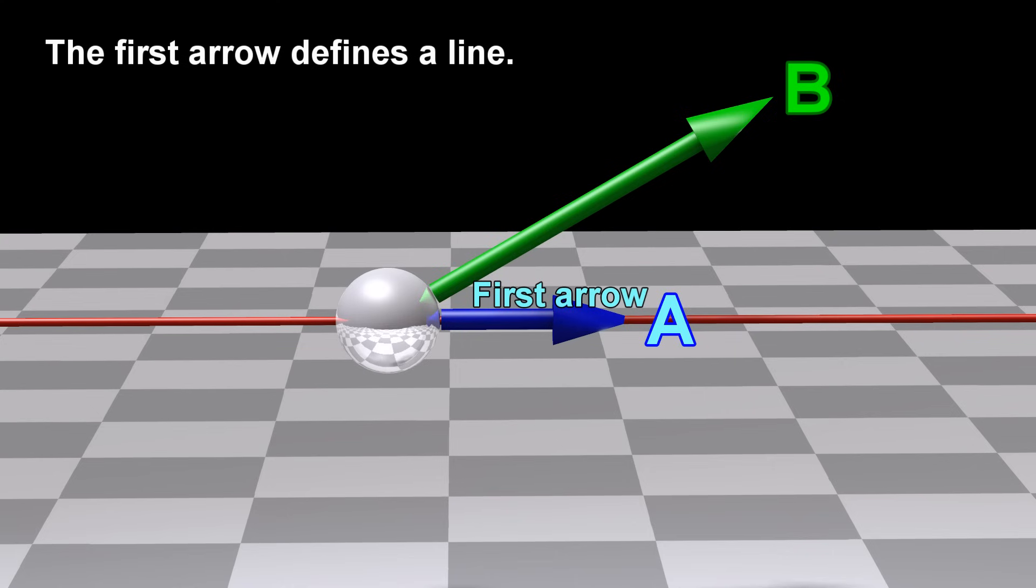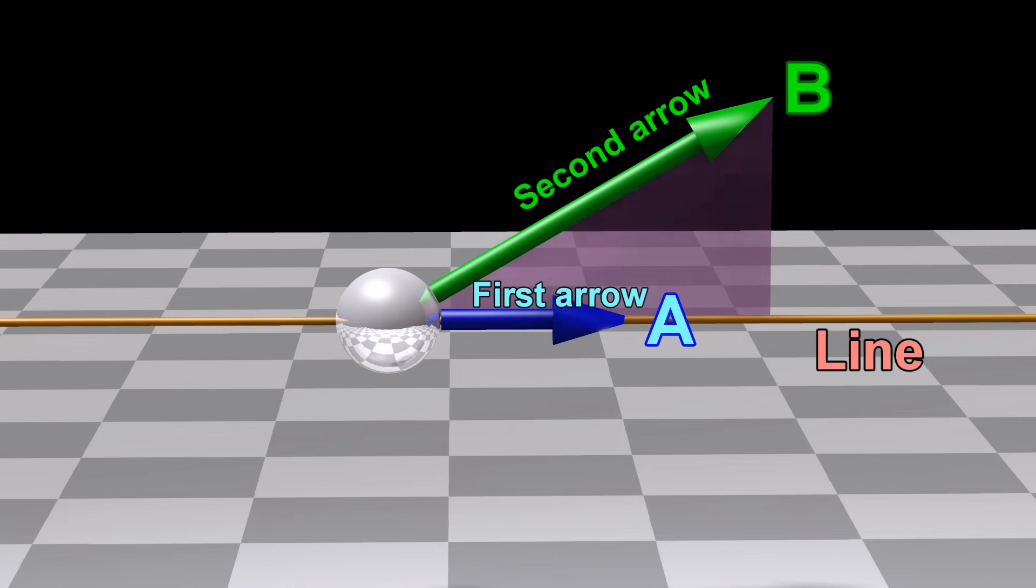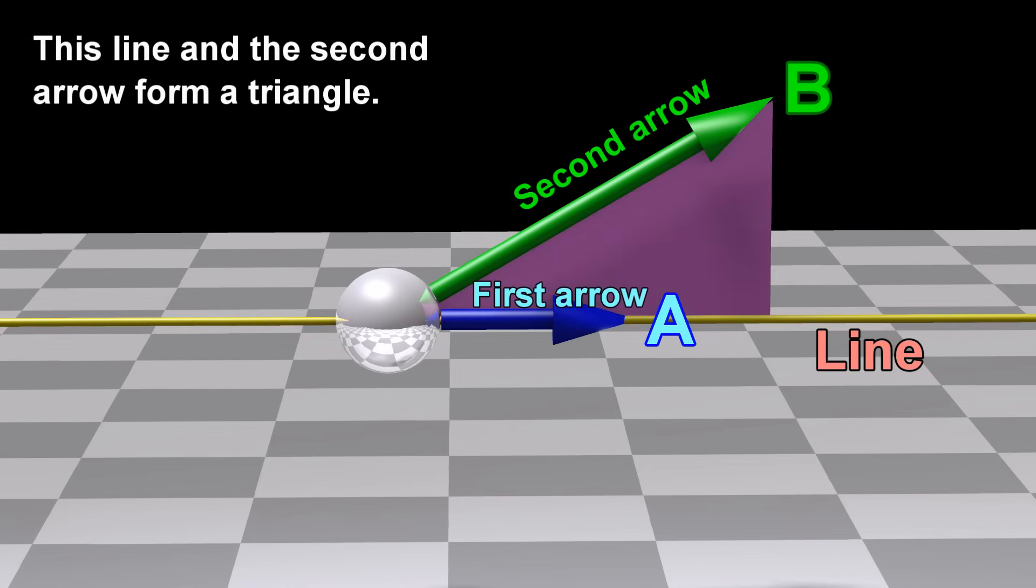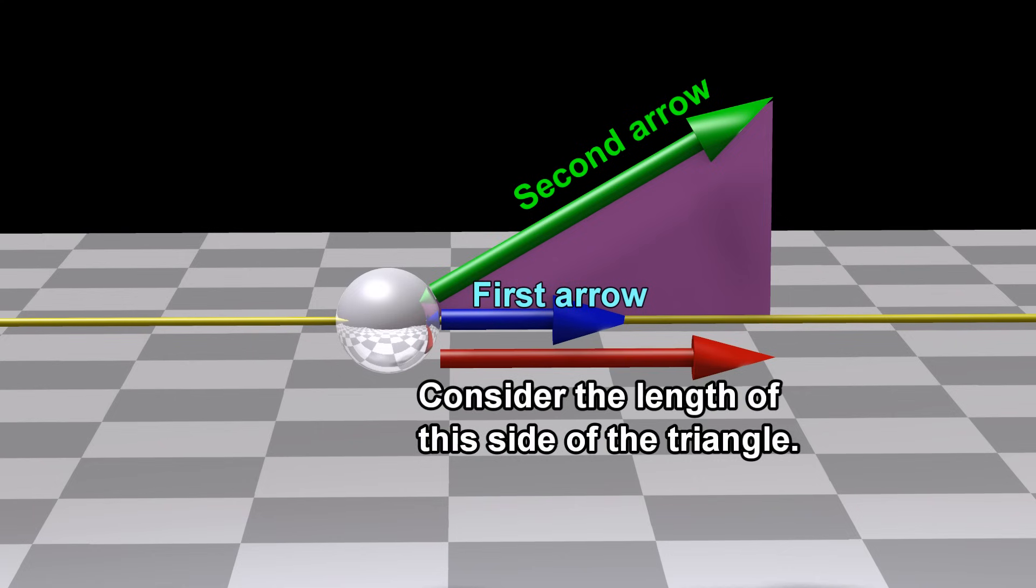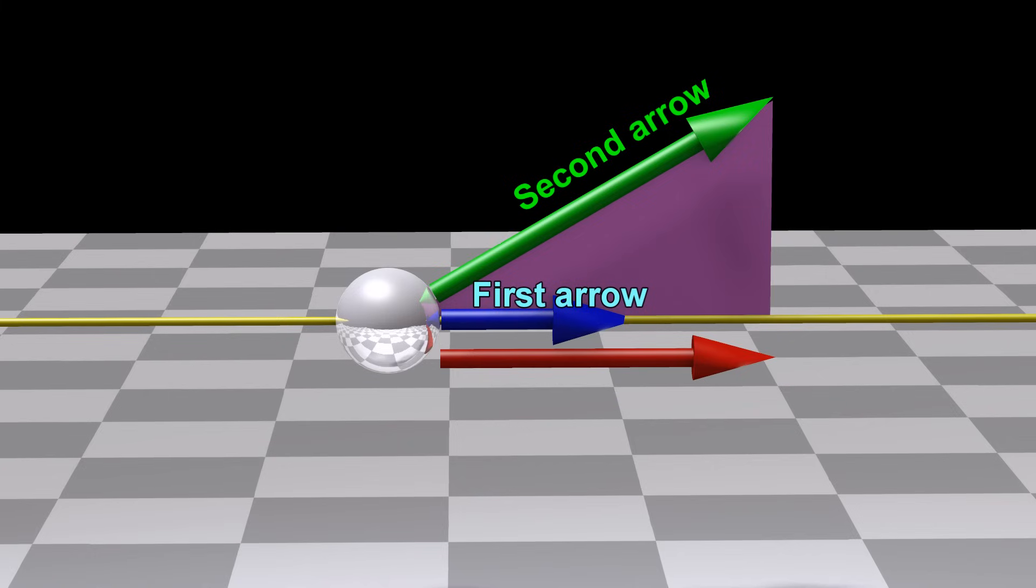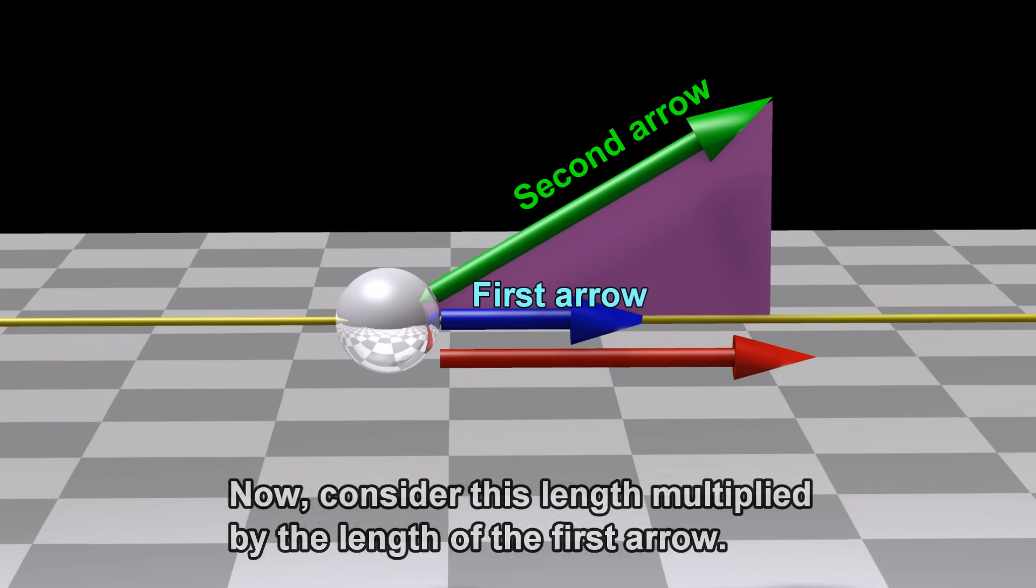The first arrow defines a line. This line and the second arrow form a triangle. Consider the length of this side of the triangle. Now consider this length multiplied by the length of the first arrow.